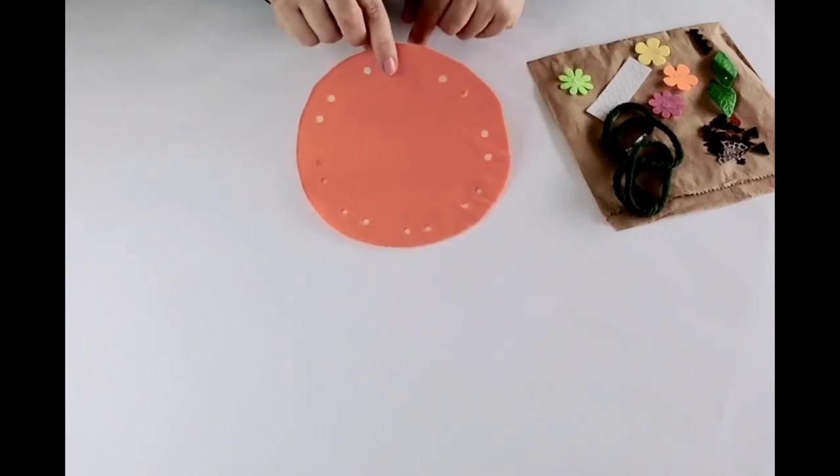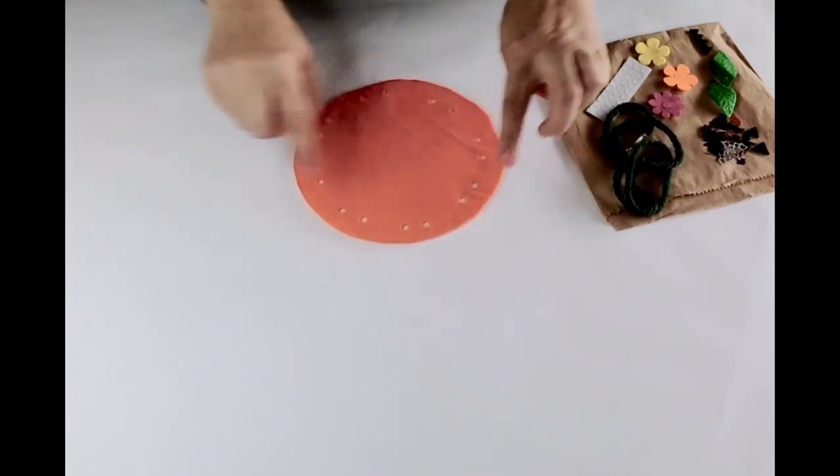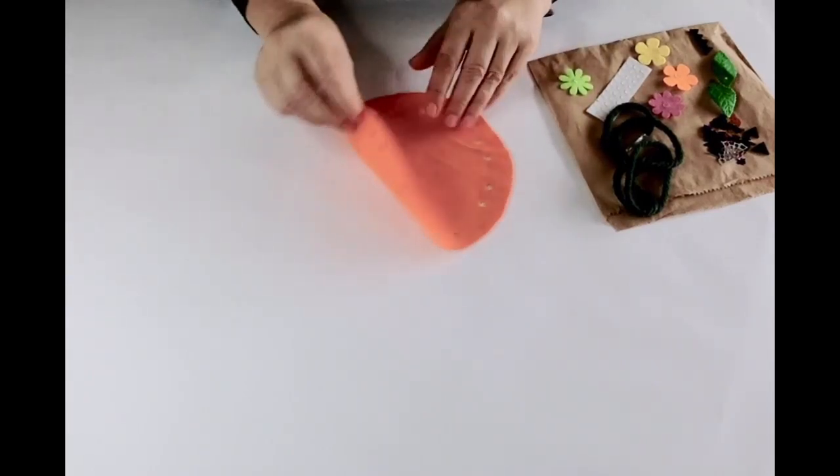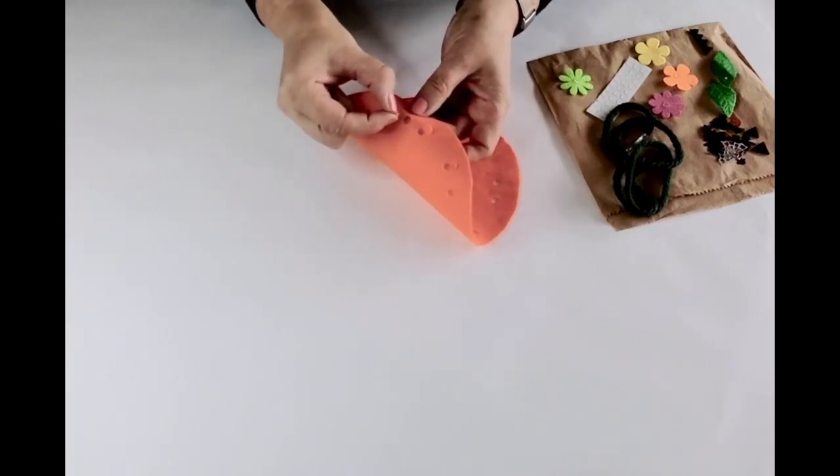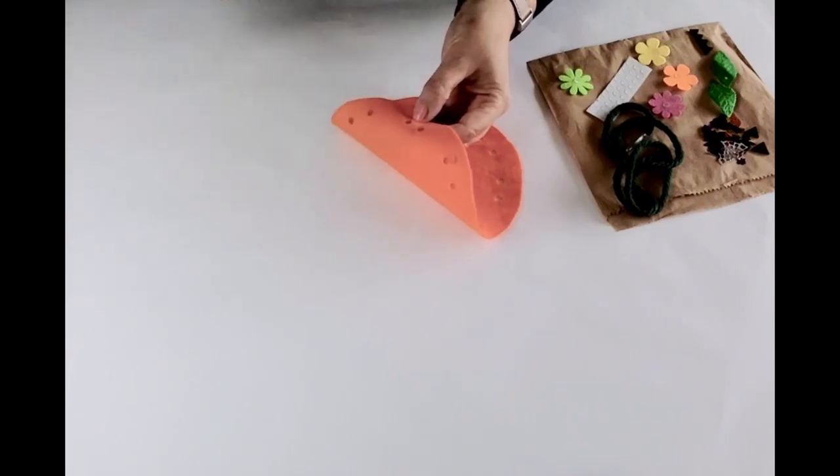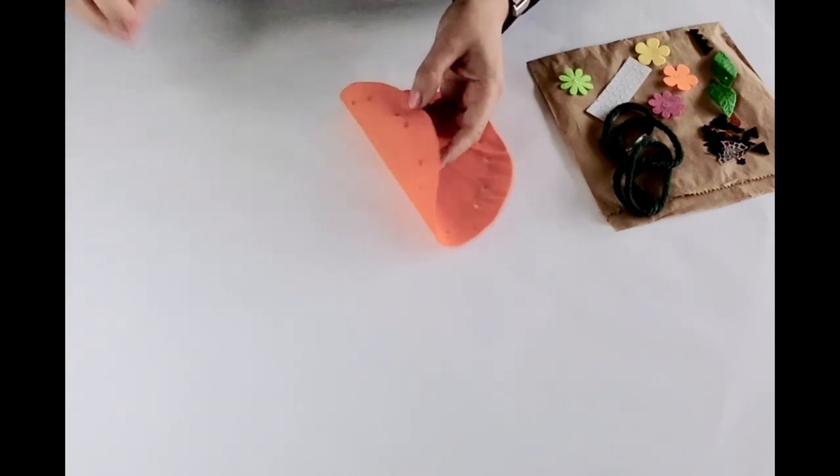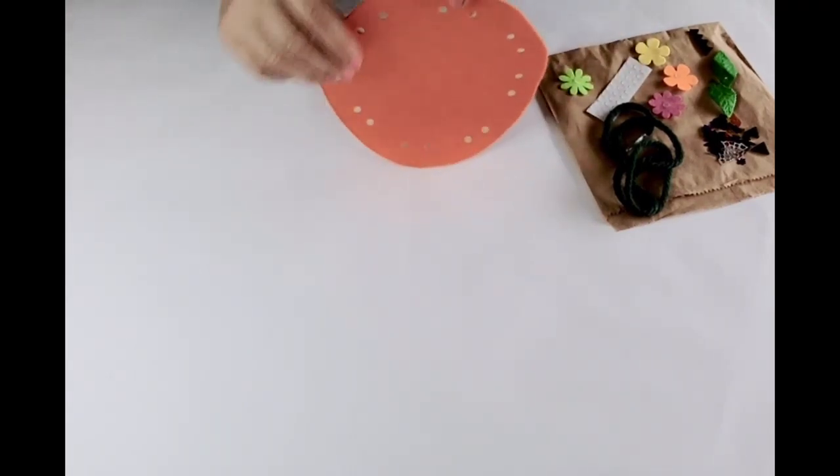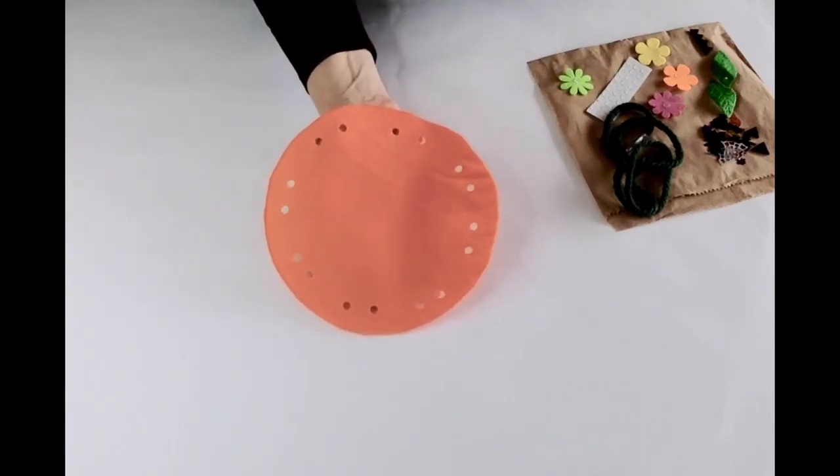You should have a cream punched felt circle. If some of the tiny circles are still intact, just pull them out like that. That's what it should look like with all the holes.